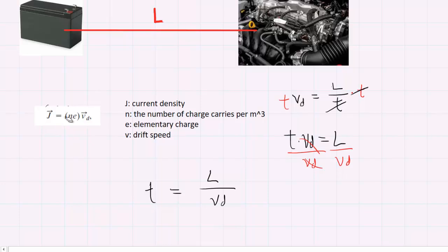We can solve this equation for the drift speed Vd by dividing both sides by that quantity ne. So the ne's cancel out, and we have current density J divided by ne equals the drift speed. We're going to substitute this expression into the equation we developed for time.